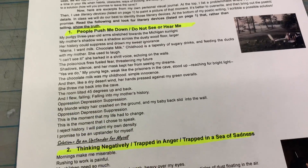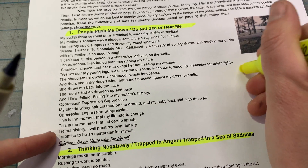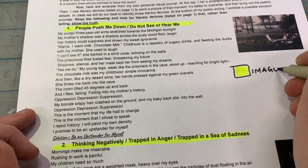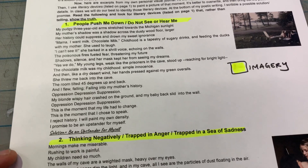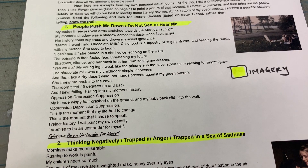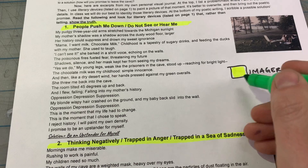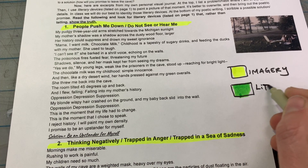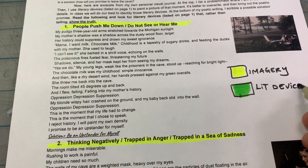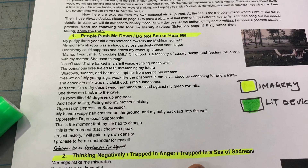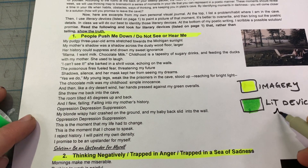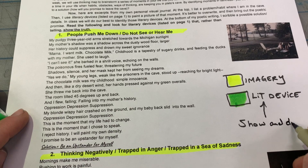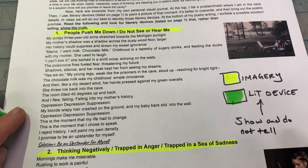Similar to when we did Dunbar, we'll use yellow for imagery. Imagery can be anything you see, hear, feel, smell — any of the senses. And then we'll do a general literary device color as well. The key with poetry is that you show and you do not tell — this is what literary devices help you do. Like an artist, you're painting a picture.